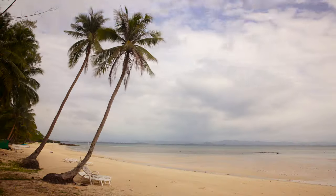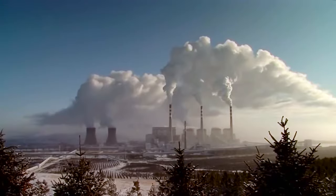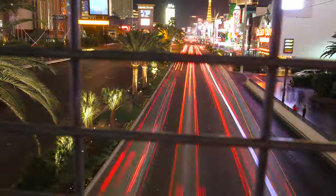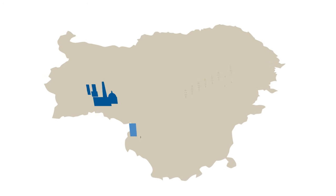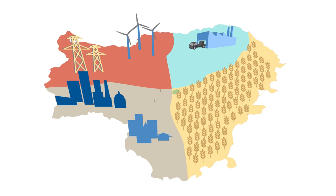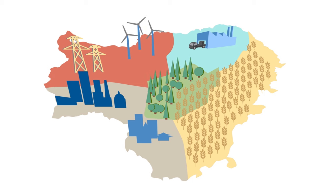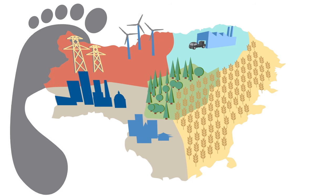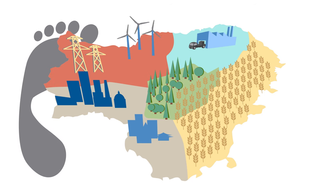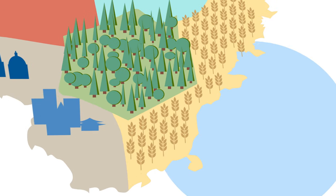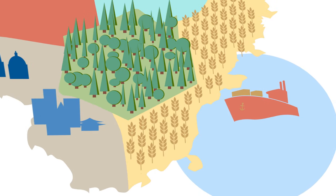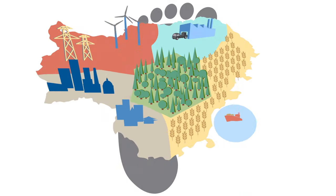Nearly every nation has committed to reducing its carbon footprint, but this is no simple undertaking. For example, let's say part of your country's plan is to restore forest land to sequester carbon. This should lead to a reduction in net carbon emissions. However, this may also reduce cropland and therefore your country's ability to produce its own food.